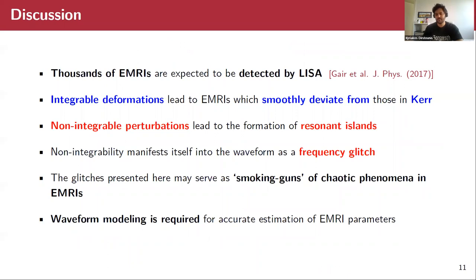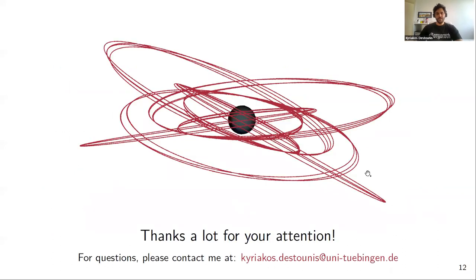To finalize, thousands of EMRIs are expected to be detected by LISA, at least 100 per year. And in this work, we have seen that integrable deformations lead to EMRIs smoothly departing from the evolution that would happen in Kerr spacetime. On the other hand, non-integrable perturbations lead to the formation of these interesting resonant islands, or Birkhoff islands, and this manifests itself in the waveform as a frequency glitch. Therefore, these glitches presented here can serve as smoking guns of chaotic phenomena in extreme mass ratio inspirals. Of course, we will need waveform modeling in order to have more accurate estimations of EMRI parameters, since even simple resonances that are not coming from a non-integrable perturbation of the Hamiltonian are still affecting parameter estimation. Thank you very much.